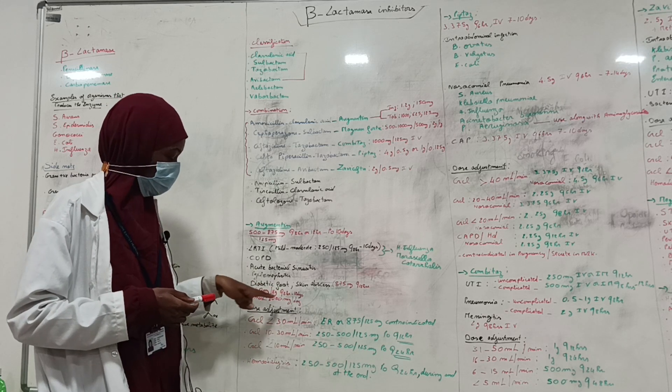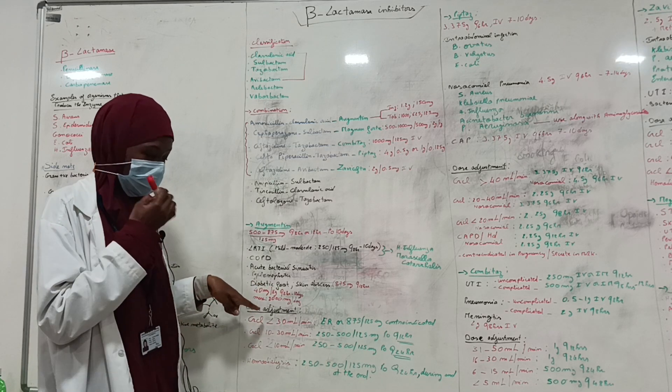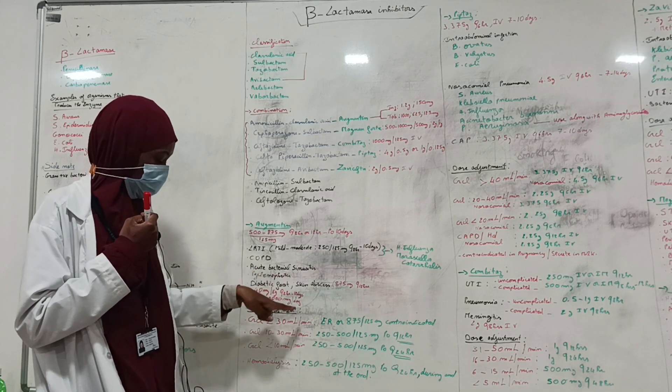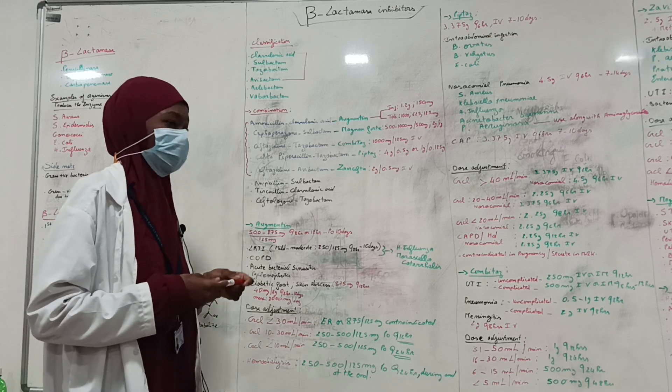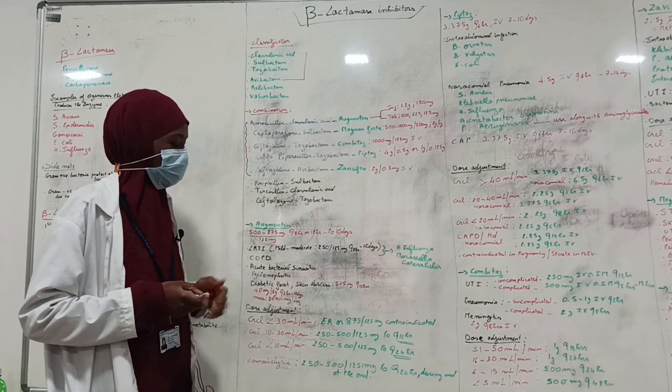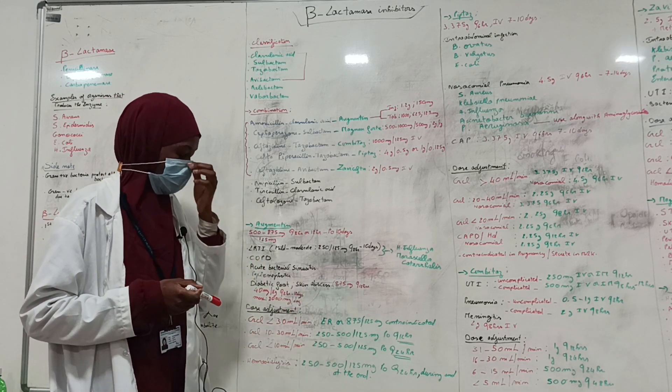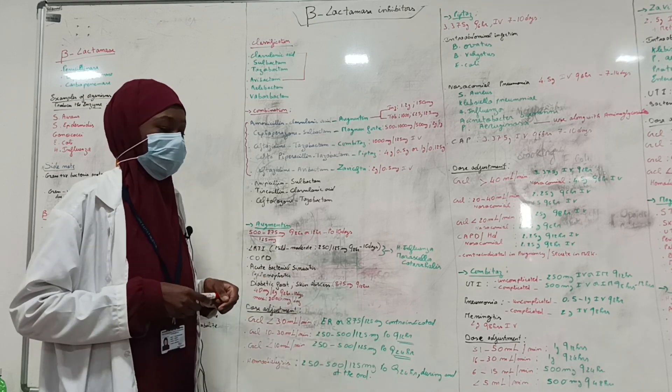For diabetic foot, 40 mg per kg every 8 hours for 10 days is recommended. Maximum dose is 2,000 mg per day. For skin abscess, 875 mg every 12 hours is recommended.